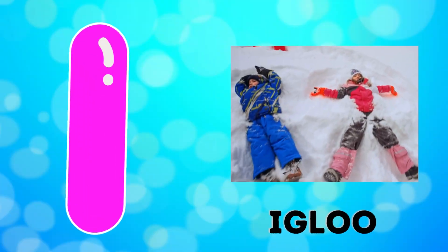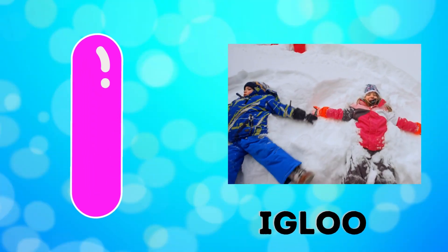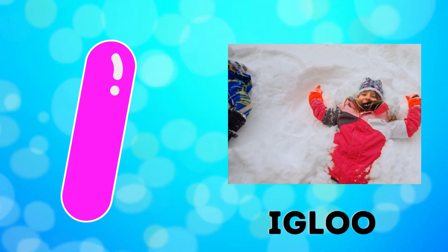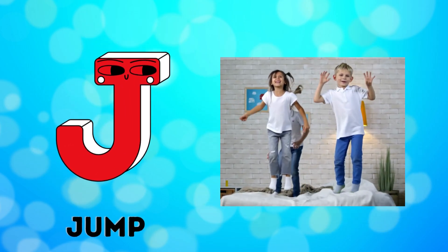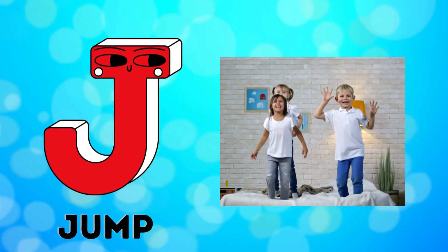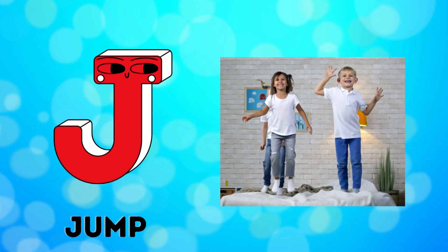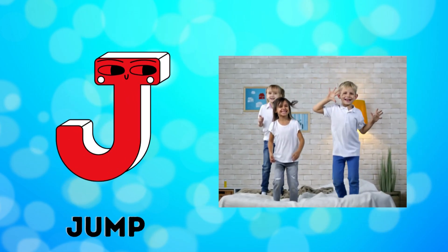I is for igloo, i-i-igloo. J is for jump, j-j-jump.